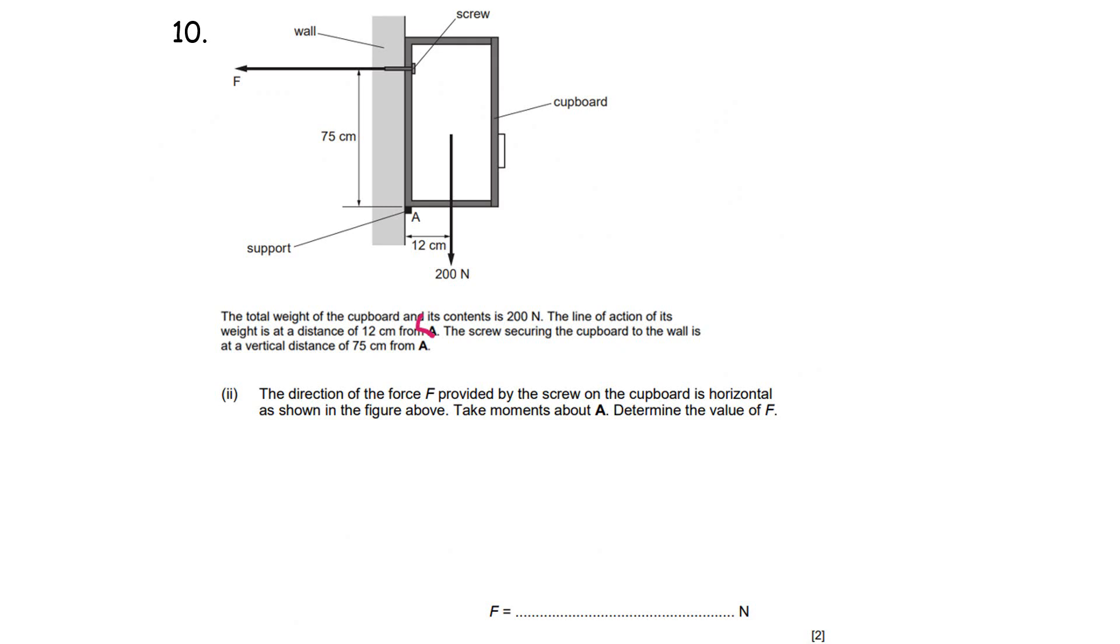So part two: the direction of the force F provided by the screw on the cupboard is horizontal as shown in the diagram. So we are looking at this force F here which is the screw pushing the into the wall there. Take moments about A and determine the value of force F.